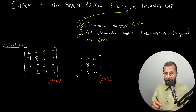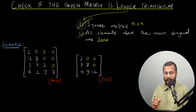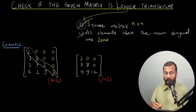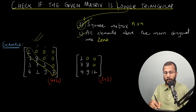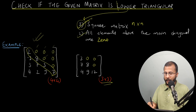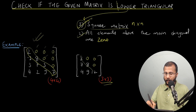Let's take an example. In this first example the matrix is a 4×4 matrix, so the first property is satisfied — it's a square matrix. If you look at the main diagonal, all the elements above it are zero. We are not concerned about the elements below the main diagonal. So this qualifies as a lower triangular matrix. Similarly, example number two is a 3×3 matrix, it's a square matrix, and all the elements above the main diagonal are zero — so this is also a lower triangular matrix.